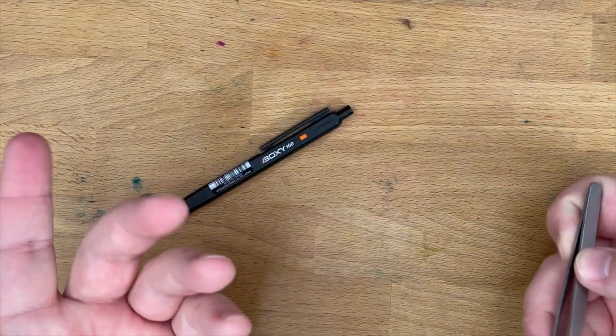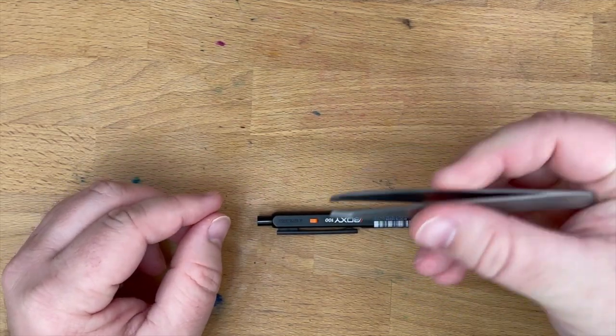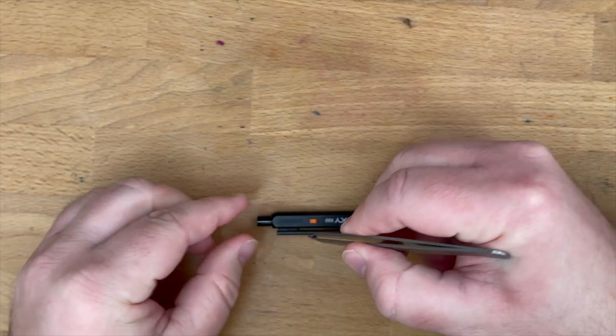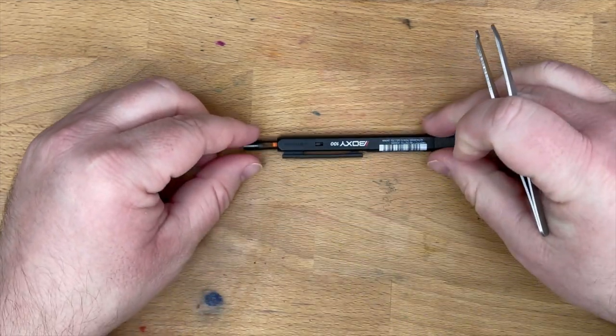It's not the easiest thing to get out, but I have figured it out. I use tweezers because it's kind of pointy right here. So what you want to do is you press down on this little orange button right here, and just kind of slide this carrier out.